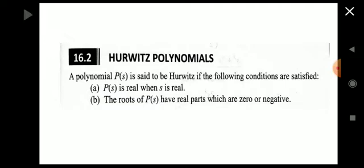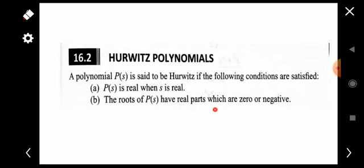A polynomial P(s) is said to be Hurwitz if the following conditions are satisfied: first, P(s) is real when s is real; and second, the roots of P(s) have real parts which are zero or negative. Zero or negative means the roots will always be in the left half of the s-plane. If the real part is positive, the roots will be on the right half of the s-plane, which is not allowed.